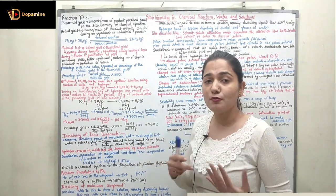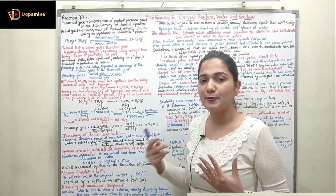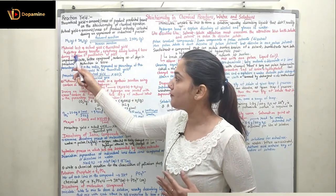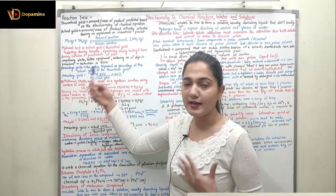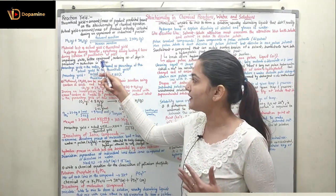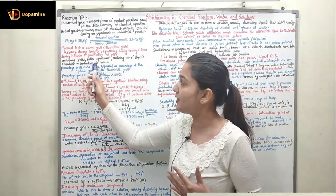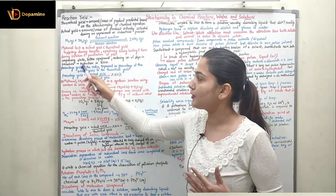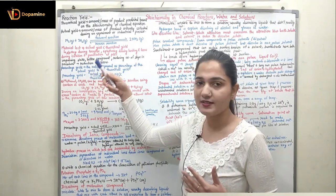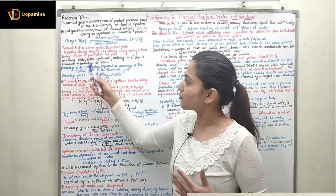How can we improve? How do we make the actual yield nearly equal to the theoretical yield? We can use improved skills, better equipment, and reduce the number of steps in the procedure. According to these three points, we can reduce the losses and improve the actual yield.